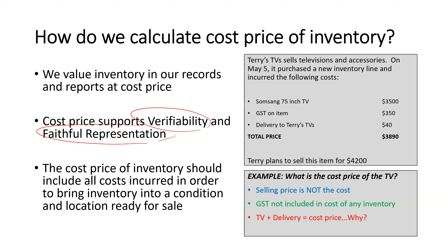The cost price of inventory is not just about the item itself, but is also about all costs incurred in order to bring the inventory into the condition and the location ready for sale. This will be important when we start to look at product and period costs. So let's have a look at what this means — all costs to bring inventory into condition and location.